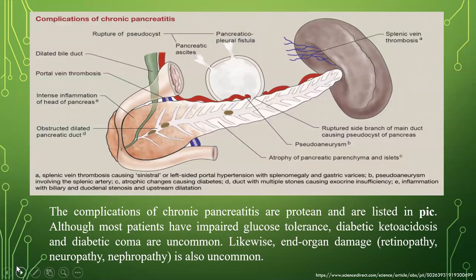The complications of chronic pancreatitis are numerous and include: ruptured pseudocyst, pancreatic ascites, pancreatic or pleural fistula, dilated bile duct, portal vein thrombosis, inflammation of the pancreatic head, obstructed and dilated pancreatic and bile ducts, splenic vein thrombosis, ruptured side branch of the main duct causing pseudocyst, aneurysm, and atrophy of pancreatic parenchyma and islets. Most patients have impaired glucose tolerance; diabetic ketoacidosis and diabetic coma are uncommon, and end-organ damage such as retinopathy, neuropathy, and nephropathy is also uncommon.